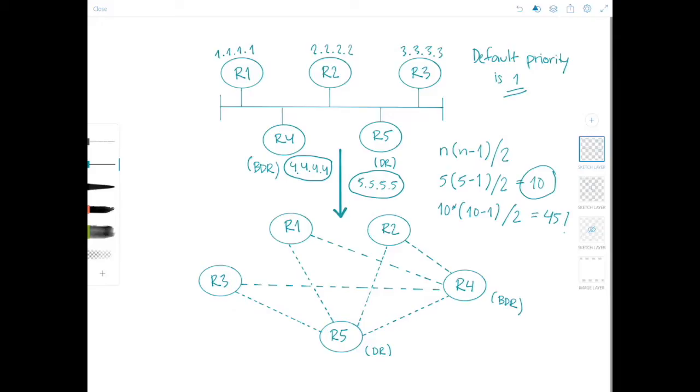So for example, let's say that R5 failed. And then 5 minutes later it came back online. So it would have the highest router ID, but it would not become the DR again. Router 4 would have overtaken its role as the DR, and a new BDR would have been elected. In this case, it would have been R3.